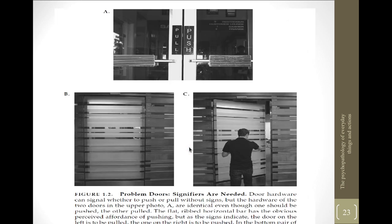Here, signifiers are required. If you see figure A, there are two doors: the left is to be pulled whereas the right is to be pushed, even though both have handles which suggest pulling. So signifiers are required indicating what to do for each door. In figures B and C, there is a glass door where it is not clear whether it opens on its left or right side — the user may have to try by trial and error. There are no visible signifiers, not even handles, to tell which side the door opens.